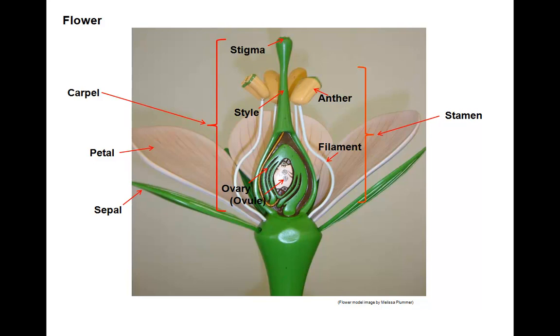The male part of the flower, the stamen, collectively known as the androecium, is made up of the stalk — the filament — and the pollen-producing anthers.